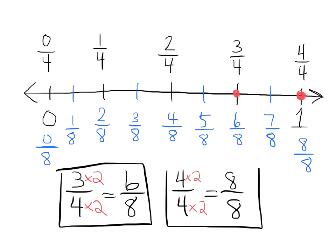Now teachers, some students are going to try and think of an additive relationship — four plus four is eight, and three plus three is six, and four plus four is eight. Your task is to try to guide them towards that multiplicative nature of equivalent fractions rather than the additive portion. Technically additive thinking turns these into more like ratios, but that's middle school. So please guide your students towards that multiplicative relationship between equivalent fractions.